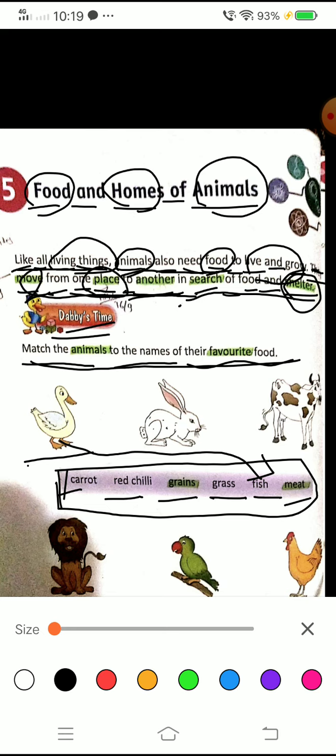Next picture, who is this? Rabbit. So rabbit likes what? Correct, rabbit likes carrot. Carrot means gajar. This is its favorite food.